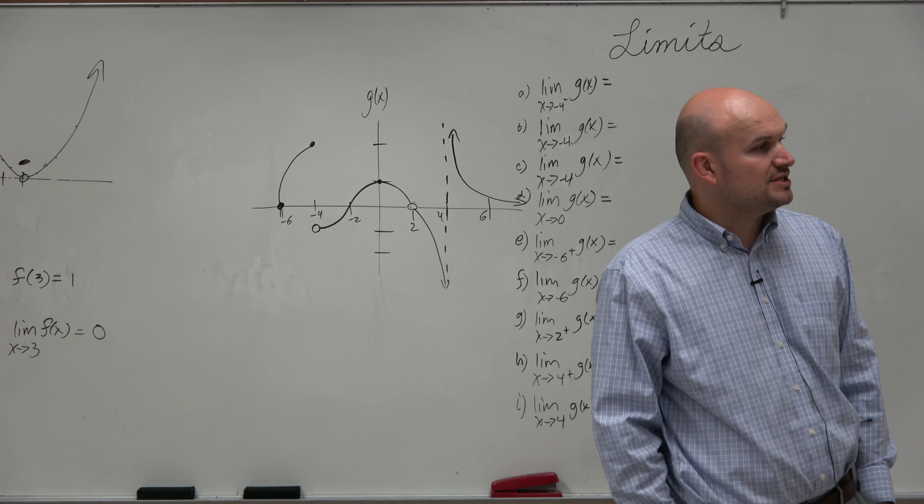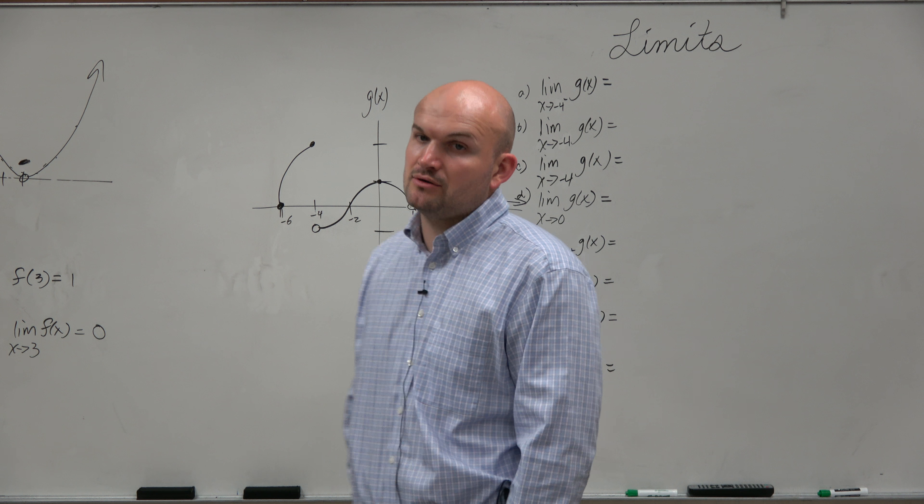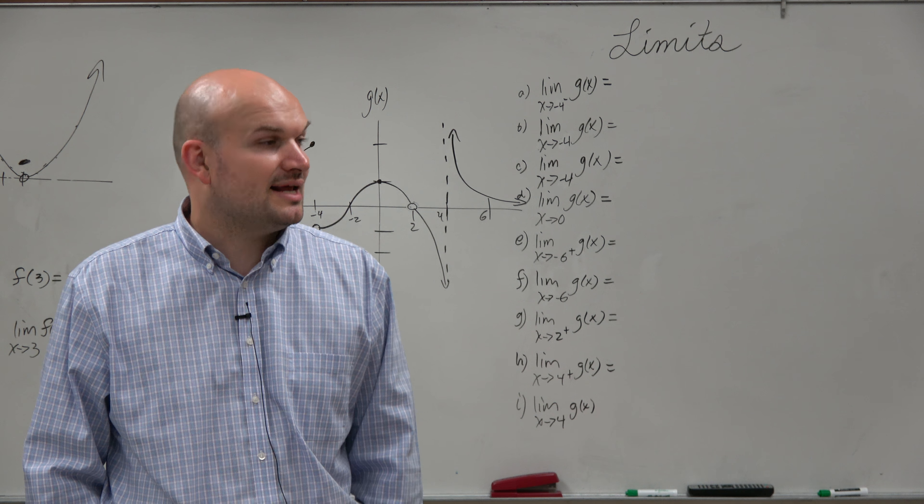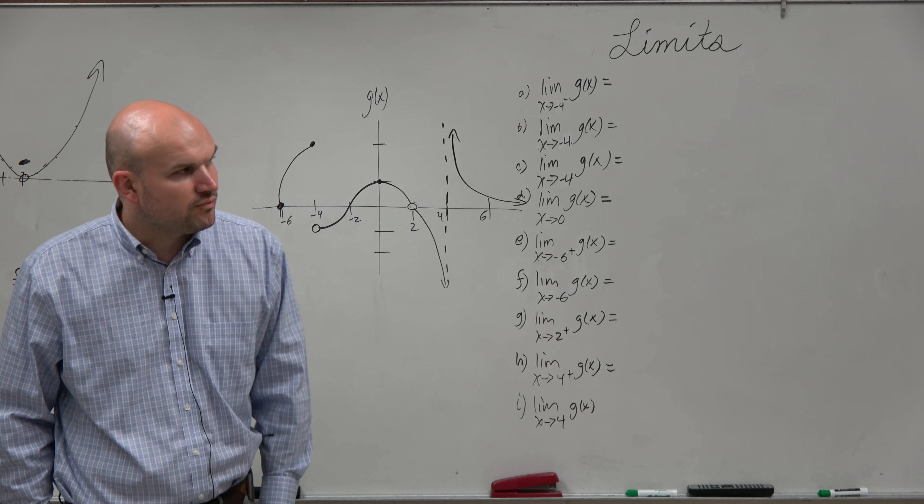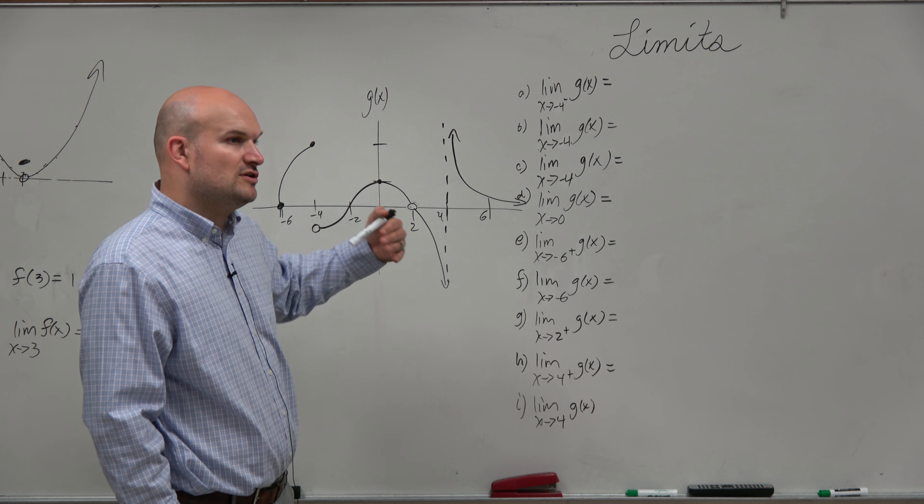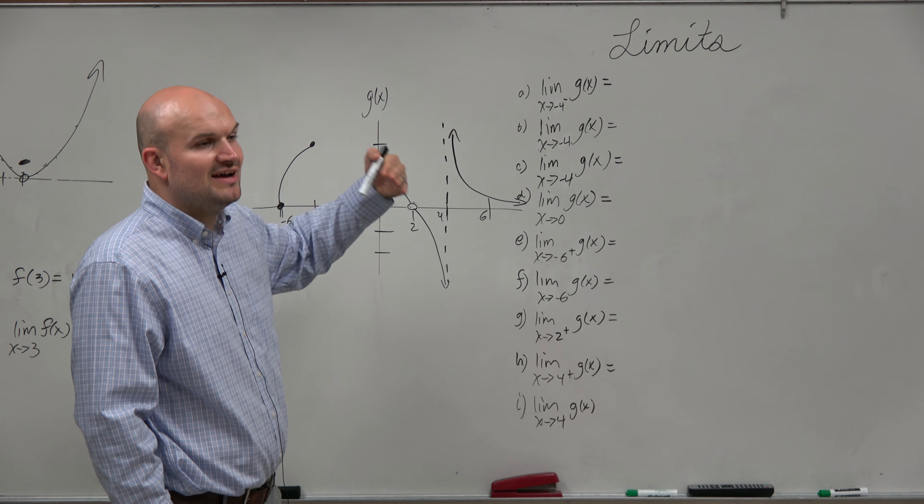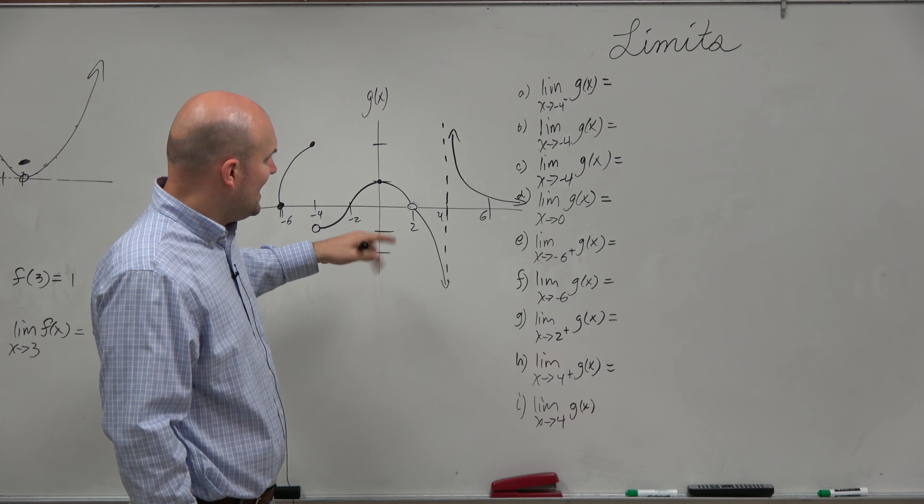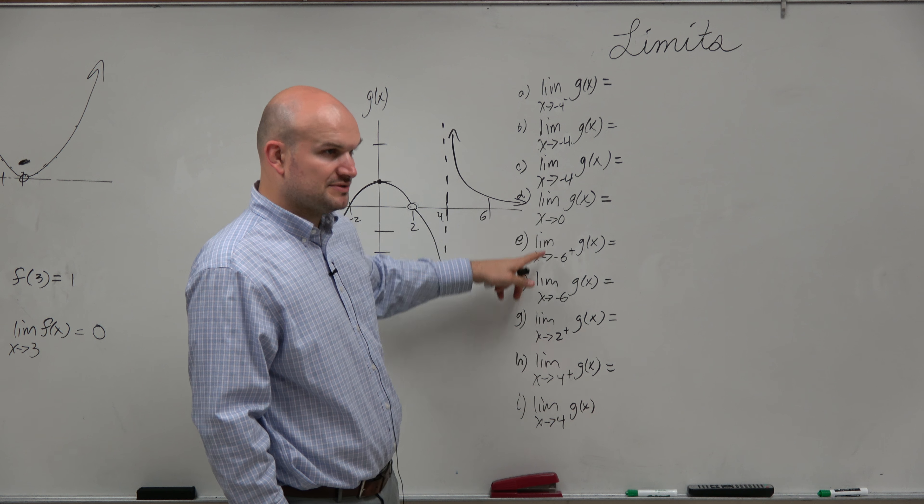The function is labeled g of x. What we're doing is I gave a whole bunch of limits. Now in this one, I'm not just doing general limits. I did left-hand limits, right-hand limits. So what we're doing is we're looking for the value that the function is approaching, the y value that the function is approaching, as x approaches different values.